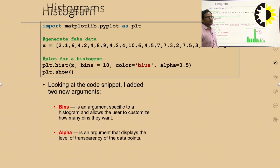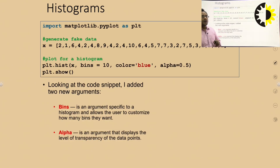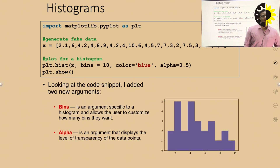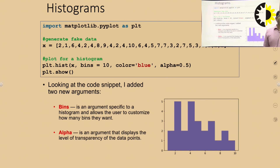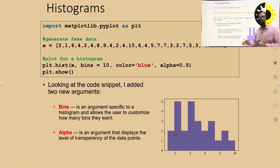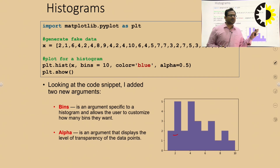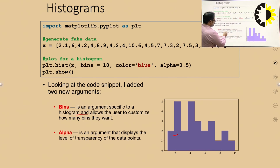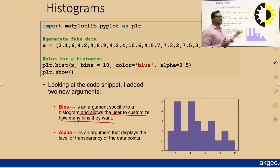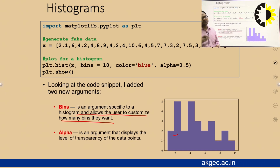Through this you can show the histogram graph. Another parameter is alpha, which is 0.5 - it is an argument to display the level of transparency of the data points. Bins is an argument that allows the user to customize how many bins they want, whether 10, 5, or 7. Alpha=0.5 basically shows the level of transparency.